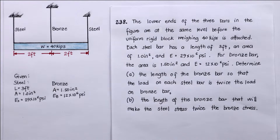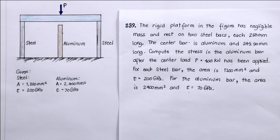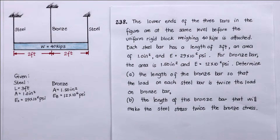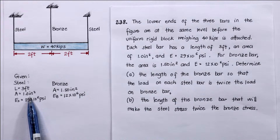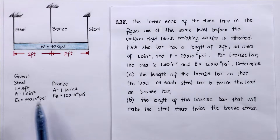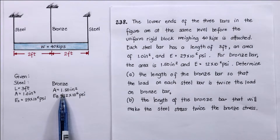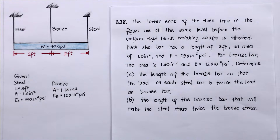Problem number 238. The lower ends of the three bars in the figure are at the same level before the uniform rigid block weighing 40 kips is attached. Each steel bar has a length of 3 feet, an area of 1.0 inch squared, and modulus of elasticity of 29×10⁶ psi. For the bronze bar, the area is 1.5 inches squared and modulus of elasticity of 12×10⁶ psi. Question letter A: determine the length of the bronze bar so that the load on each steel bar is twice the load on the bronze bar.